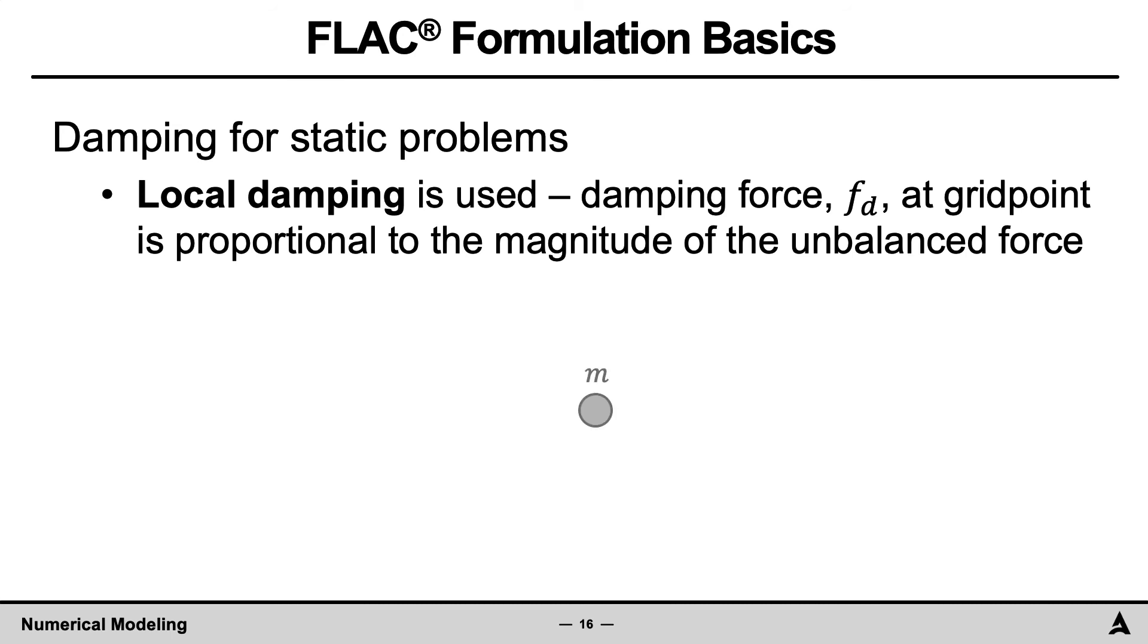For example, consider a node with a mass M and an unbalanced force F. Due to this unbalanced force, the mass will move with a specific velocity, U dot. To reach static equilibrium, the damping force Fd will then be applied to this node, but in the opposite direction.